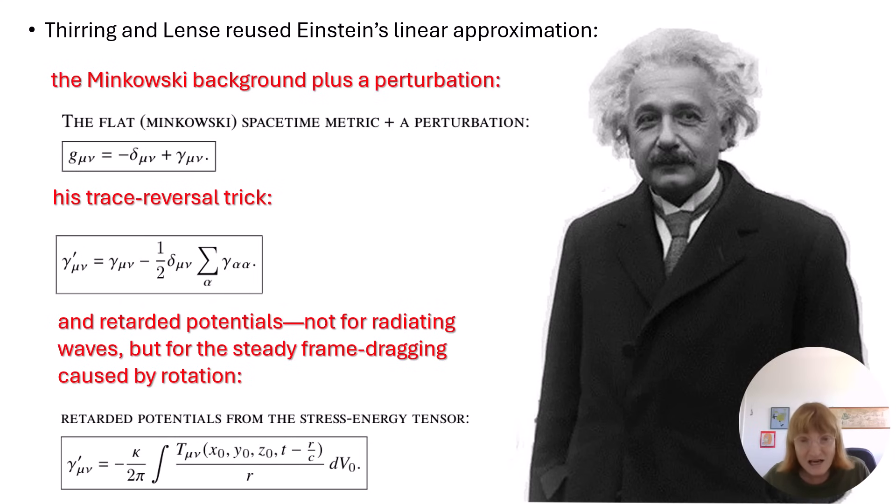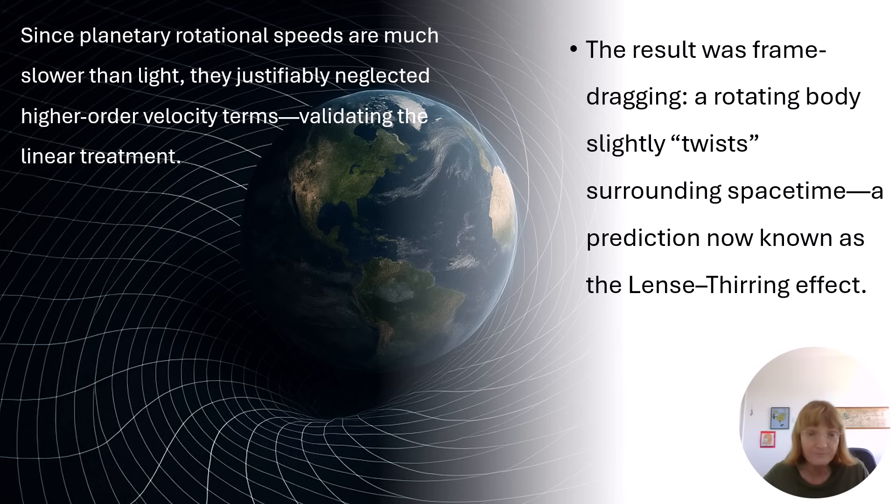Thirring and Lense reused Einstein's linear approximation—the Minkowski background plus a perturbation, his trace-reversal trick, and retarded potentials—not for radiating waves, but for the steady frame dragging caused by rotation. Since planetary rotation speeds are much slower than light, they justifiably neglected higher-order velocity terms, validating the linear treatment.